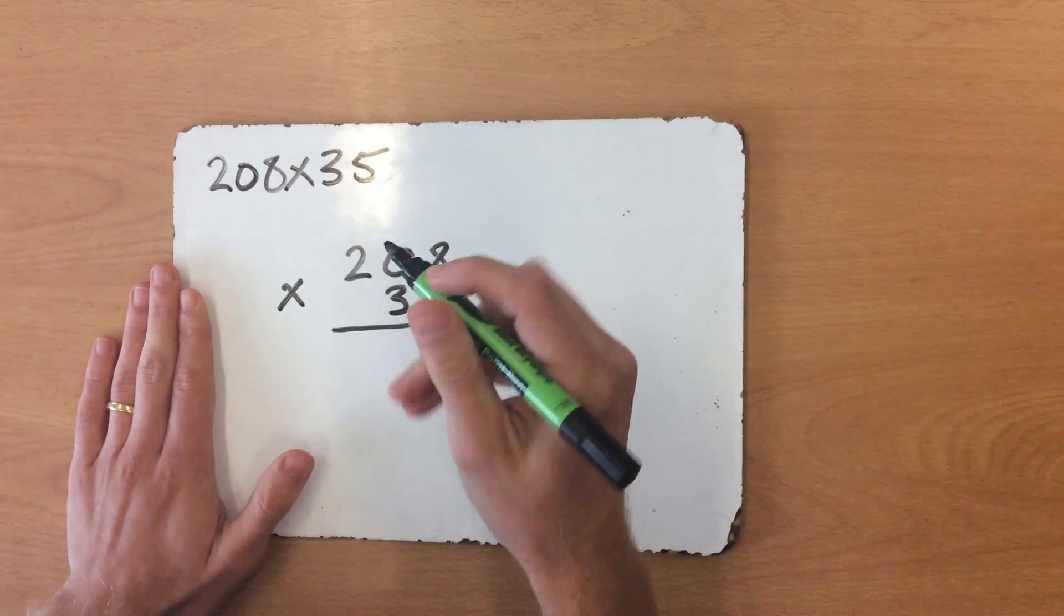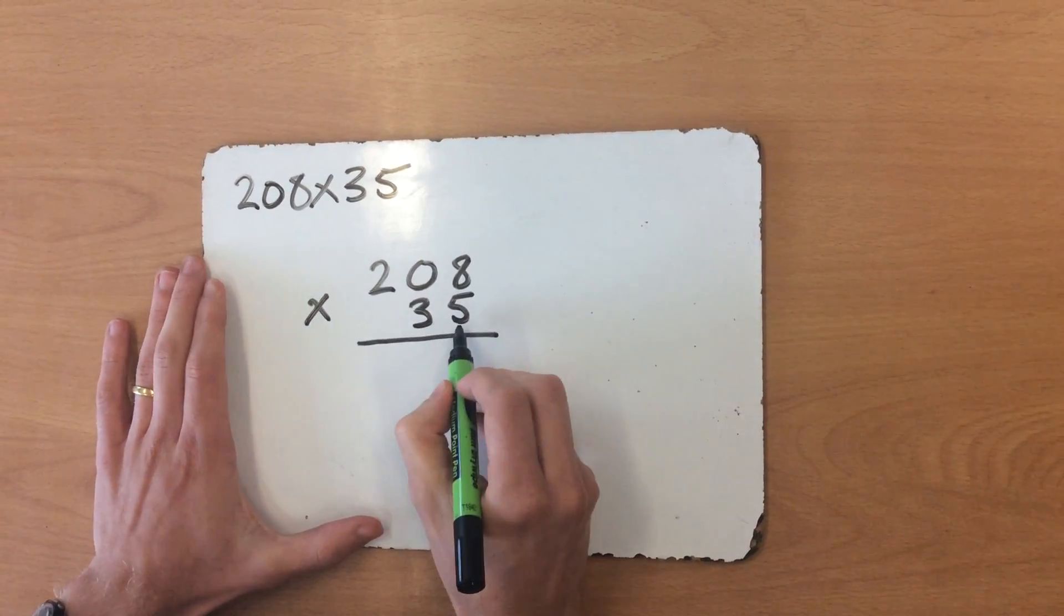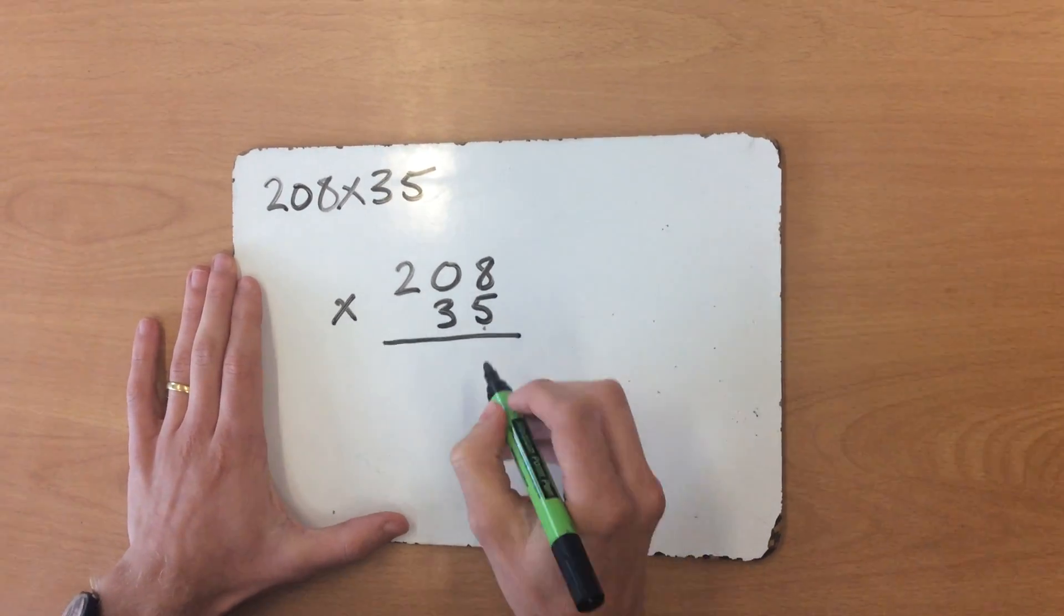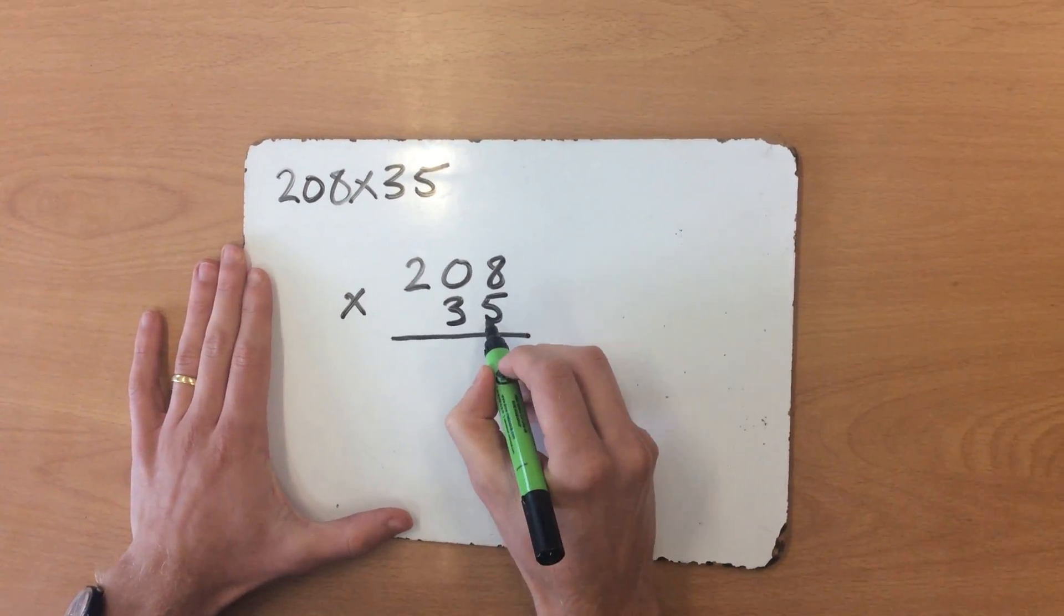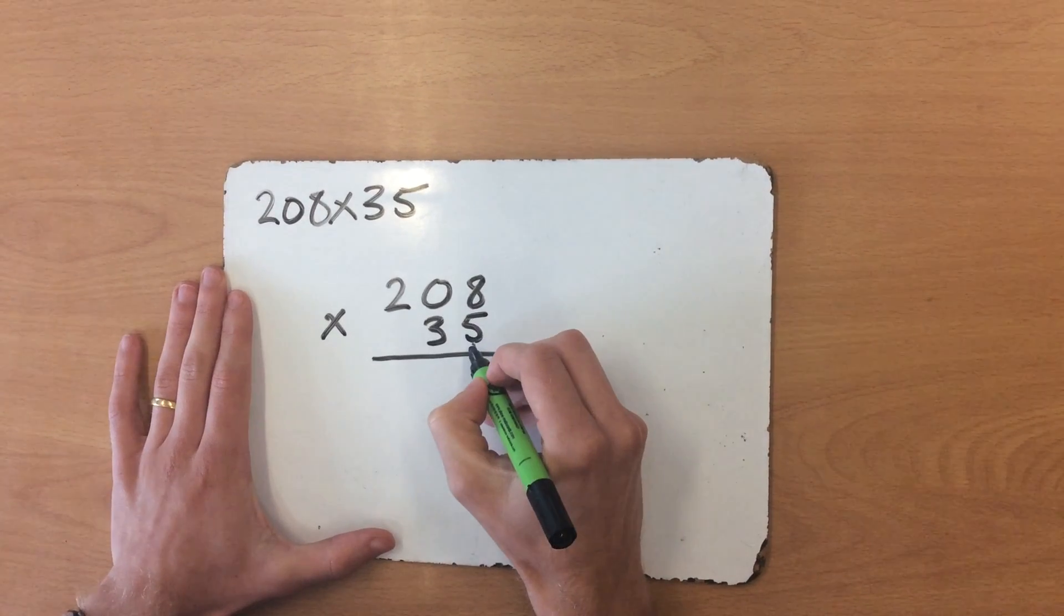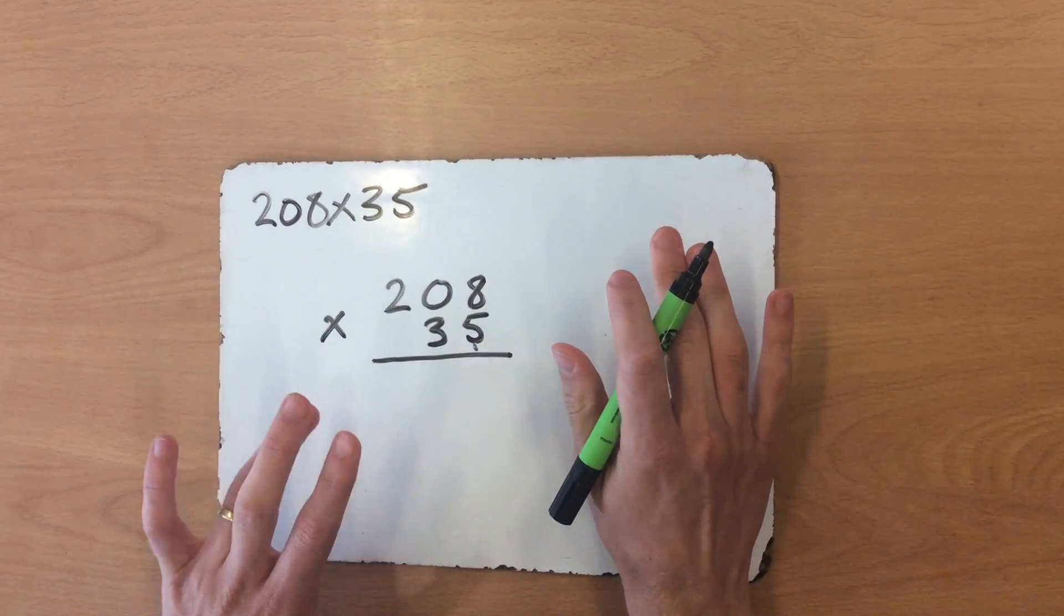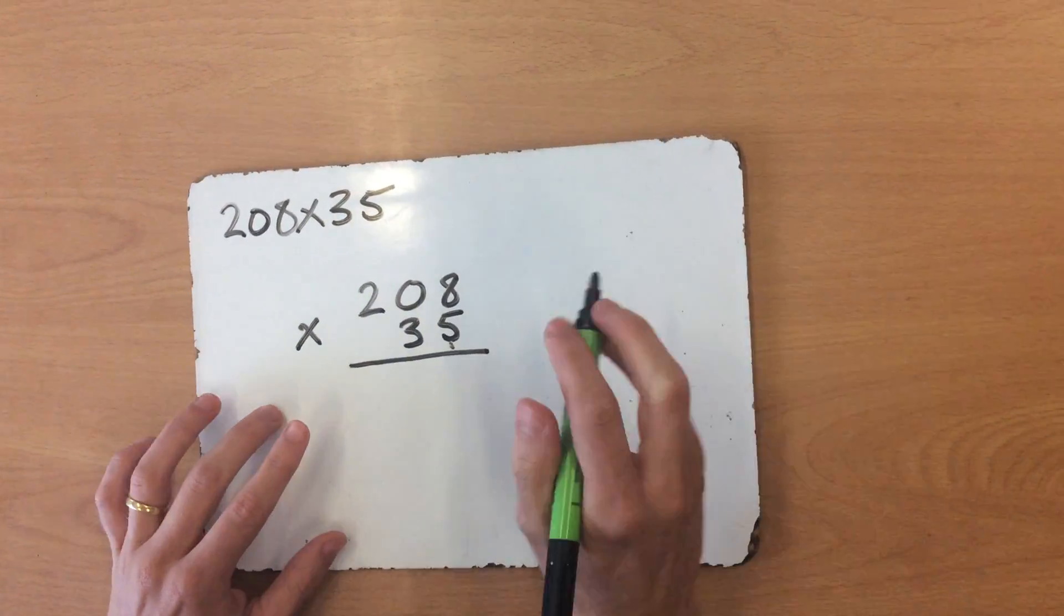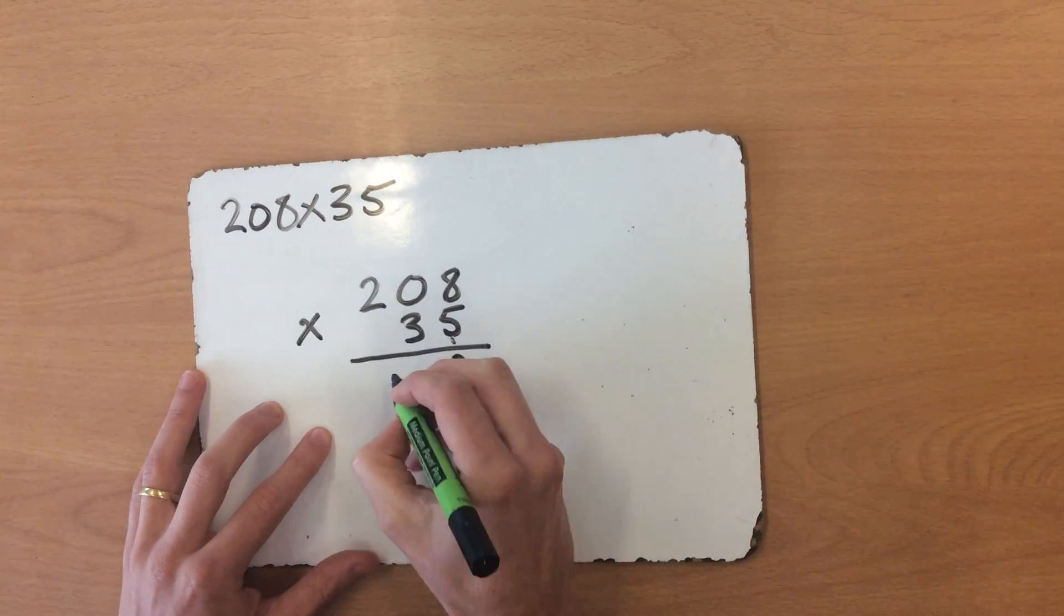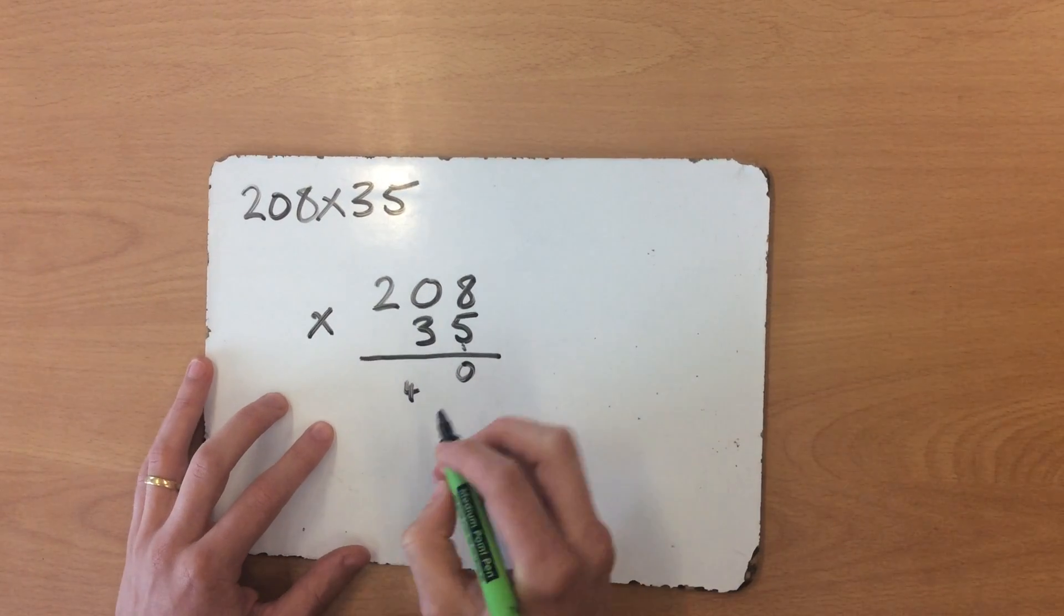Now that we're in multiplication, I always start with the ones. I've got 35 down here, I'm going to start with the 5. So I'm going to do 5 multiplied by 8: 5, 10, 15, 20, 25, 30, 35, 40. I'm going to put a 0 and carry the 4 tens over.